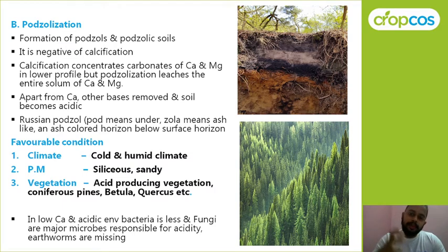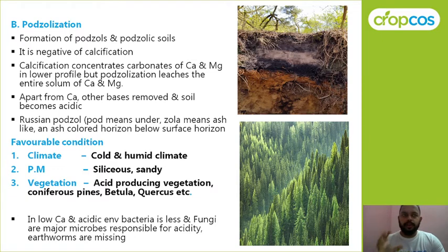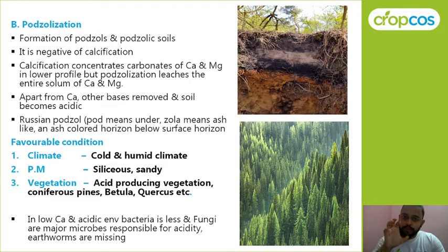First, porzolization basically means the removal of iron and aluminum — or more specifically, removal of iron and aluminum oxides — as complexes with humus. In certain conditions, iron and aluminum oxides form chelate-like structures with humus. So it is the process of removal of sesquioxides, often in complex with humus, from the upper horizon (A) to the lower horizon (B).